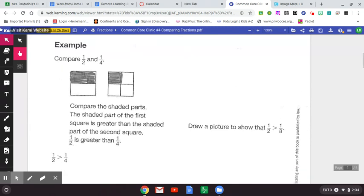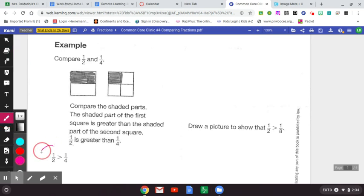Let's take a look at the example question. Compare one-half and one-fourth. Well you can compare the shaded parts quite easily with your eyes. The shaded part of the first square here is greater than the shaded part of the second square. So we can say one half is greater than one-fourth and we can write the number sentence this way. So third graders need to be able to compare fractions writing a number sentence just like this one. I can also say one-fourth is less than one-half. That's a true statement based on the model here.